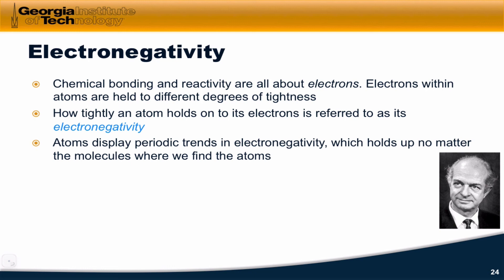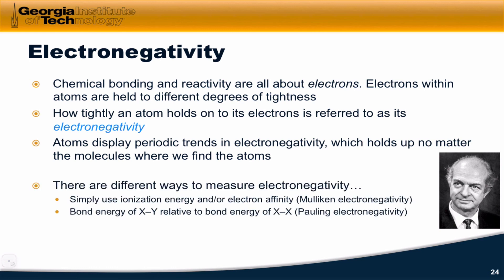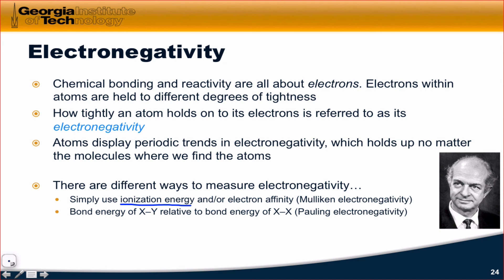Those trends hold up no matter where we find the atoms — no matter what molecules we find them in — their electronegativity is transferable from one molecule to another. There are different ways we can measure electronegativity. We've defined it qualitatively as the ability of an atom to hold on to or attract electrons to itself. But how can we quantify that? One idea is to use the ionization energy and/or the electron affinity. Ionization energy is the energy required to knock an electron from the atom, so that should be related to electronegativity.